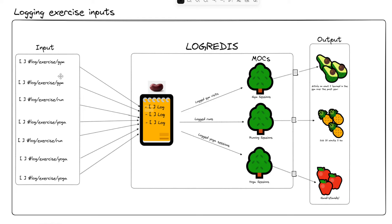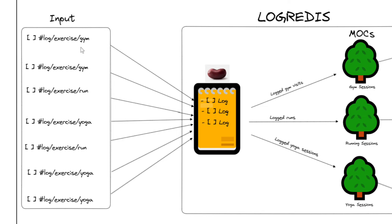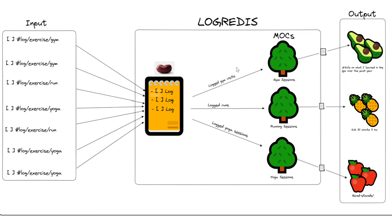We give it some extra context. What is this log about? Well, it's about you going to the gym. What is this log about? Well, it's you going for a run. So we use this Relate to discover these logs again in the future. We logged it, we related it by putting a hashtag in more context, and then we start to pull it through via different dataview queries to the respective pages or MOCs where we can view that data grouped together.